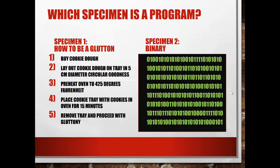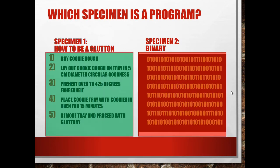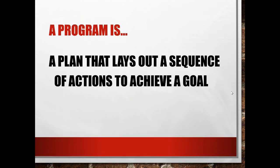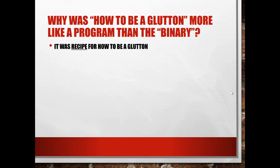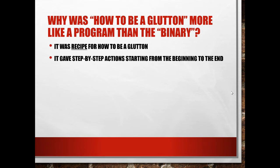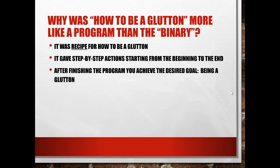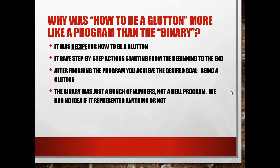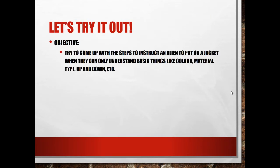Proceed with your gluttony enjoying those delicious cookies. So which one is actually a program? We have the recipe for how to be a glutton and we have the binary. If you said 'how to be a glutton,' you would be correct. A program is a plan that lays out a sequence of actions to achieve a goal. The goal here was how to be a glutton, whereas there's no obvious plan or sequence worked out in the binary. The recipe gave step-by-step actions from beginning to end, achieving the desired goal. The binary was just a bunch of numbers — not a real program.